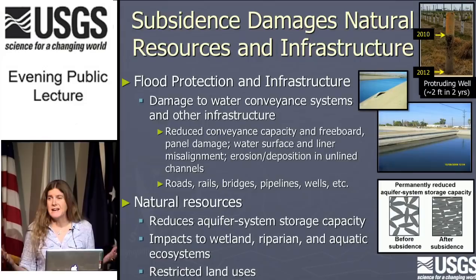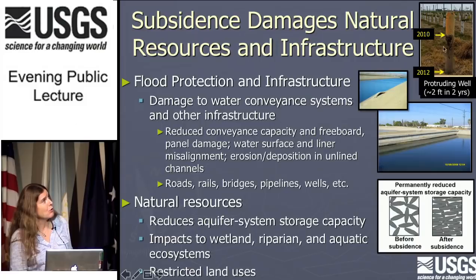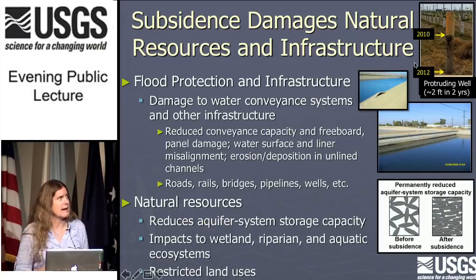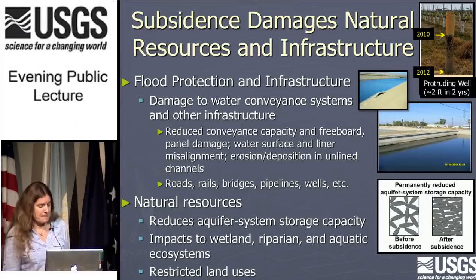While canals are the most sensitive to differential subsidence, really any infrastructure that crosses these areas can be impacted: roads, railways, bridges, pipelines, and wells. Here's another picture of a well in an active vineyard — a very deep well drilled for oil and gas exploration. When they drilled it in 2010, they painted the top orange so that farm equipment wouldn't hit it. Well, within two years, you can see two more feet of that pipe are exposed. That's two feet of subsidence in two years.